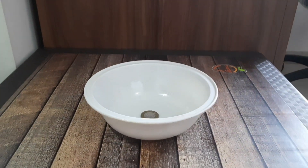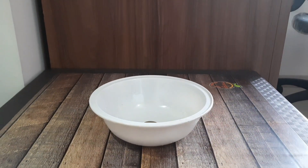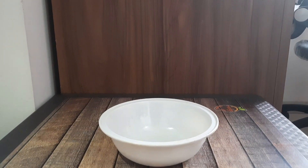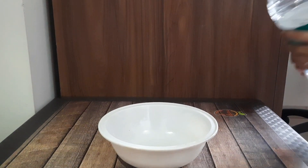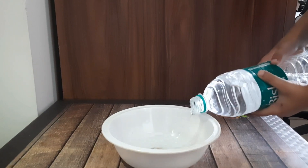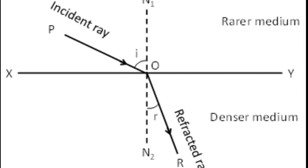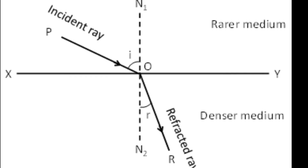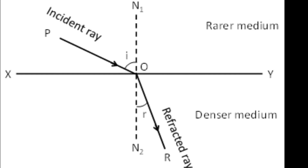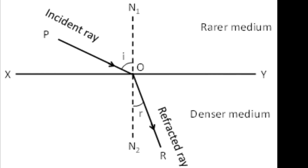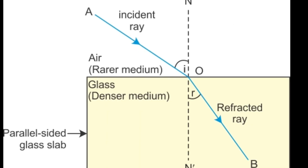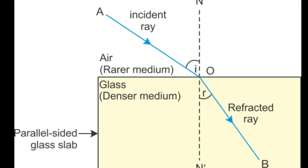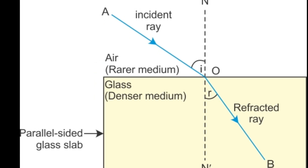Today we are going to show you a simple magic trick, or a simple science trick, which uses the phenomenon of light, i.e. refraction of light. We know that when light passes from a rarer to denser medium, the refracted light bends towards the normal, and when light passes from a denser medium to a rarer medium, the refracted light bends away from the normal.